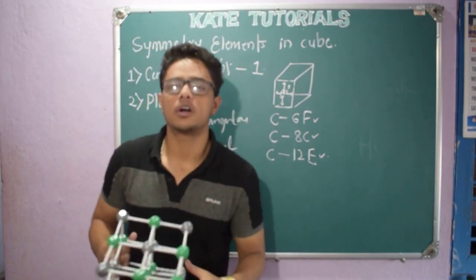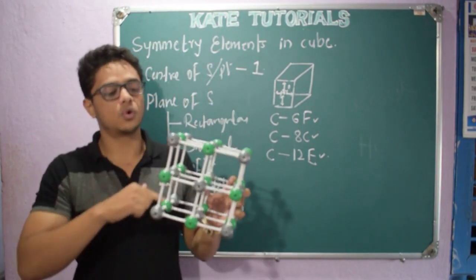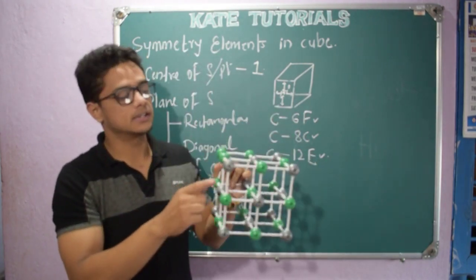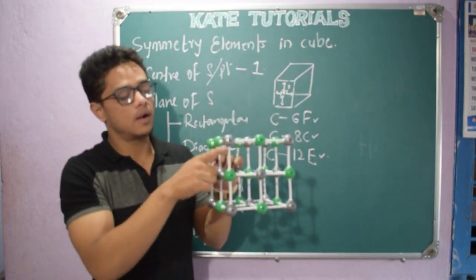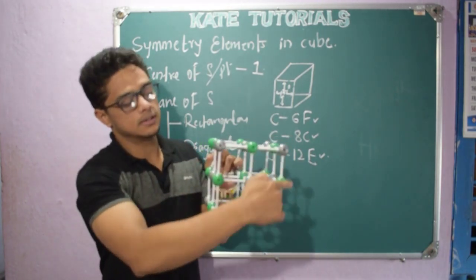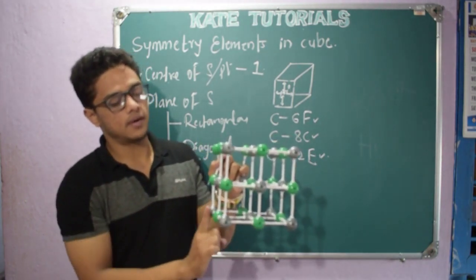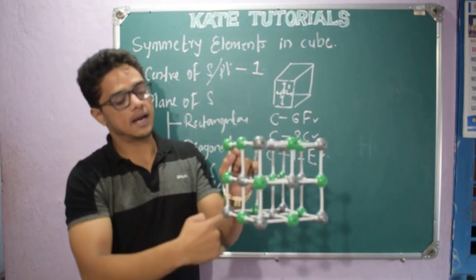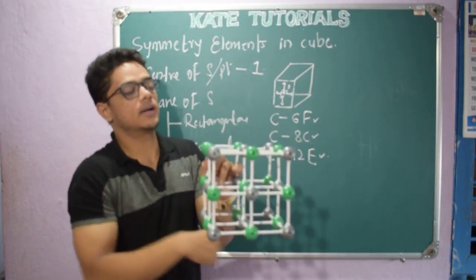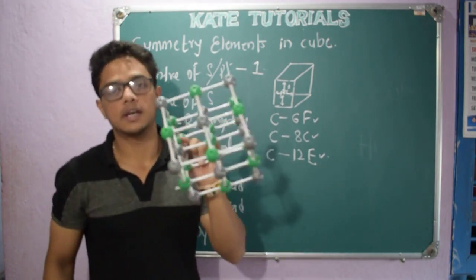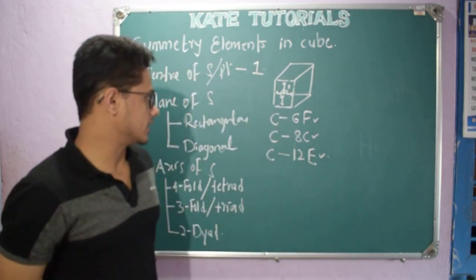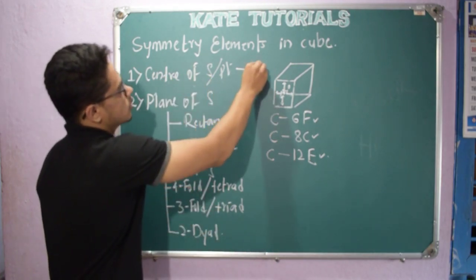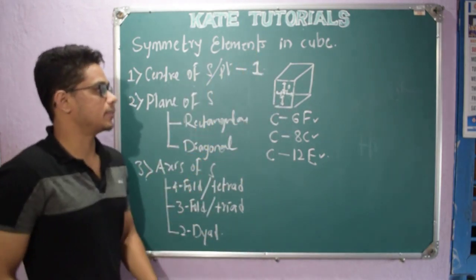If you are not getting it, take a cube-shaped sponge and count it — you will get it. Counting the edges again: one through twelve. Totally in a cube we will have twelve edges. Now recap: center of symmetry — in a cube we have only one center of symmetry, which is the point from which every face is equidistant.